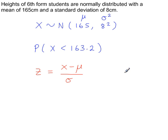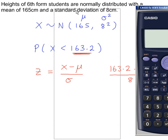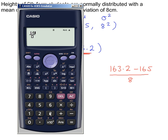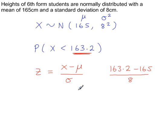Putting the values in gives us z = (163.2 minus the population mean 165) divided by the standard deviation 8. So we get a z value of minus 0.225, which we write as minus 0.225.